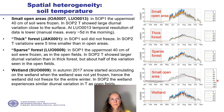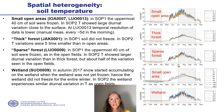During SOP 2, the soil temperature showed larger diurnal variation in sparse forest than in the thick forest, but showed even larger variation in the open fields, in the wetland, and in the small open areas.